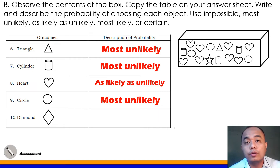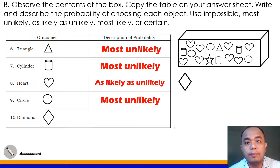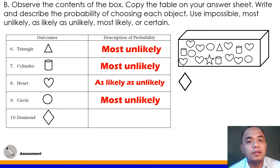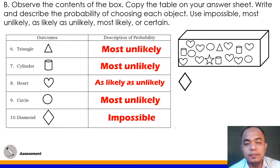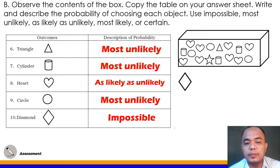Number 10: Diamond or rhombus shape. There are no diamonds or rhombuses inside our box, so there is an impossible chance of picking a diamond or rhombus. The correct answer for number 10 is impossible.